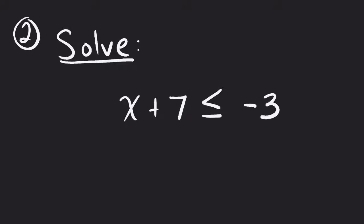The property will work the same way. I could still subtract 7 from both sides, keeping it balanced. The 7 minus 7 should zero out. That's what we're trying to make it do. And then that leaves me the x by itself with a less than or equal to negative 3 minus 7.